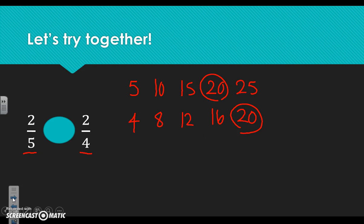So let's find what our fraction would be with a denominator of twenty. Starting with two fifths: five times what gives me twenty? Five times four is twenty, and two times four is eight. So two fifths is equivalent to eight over twenty.